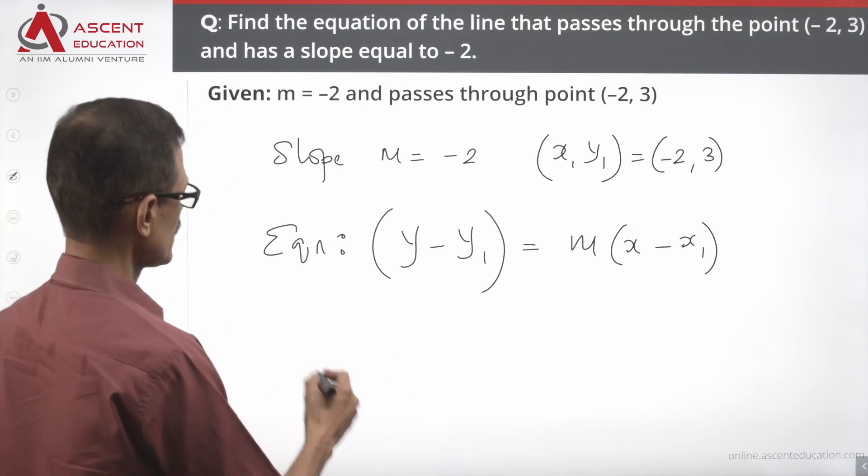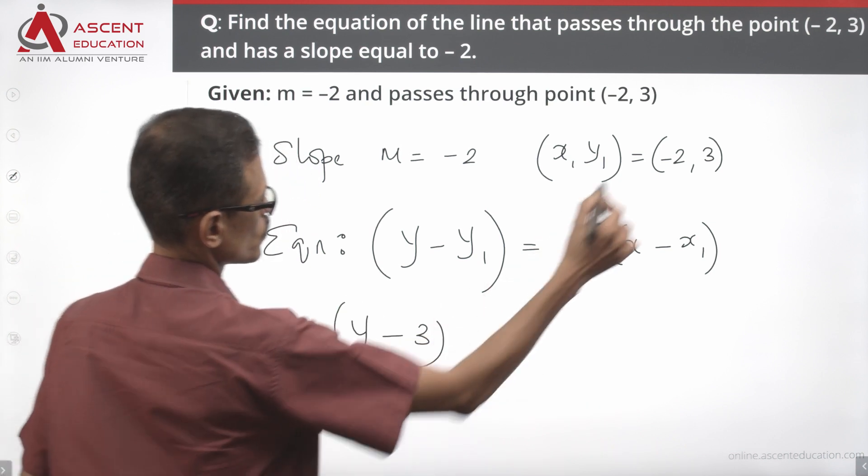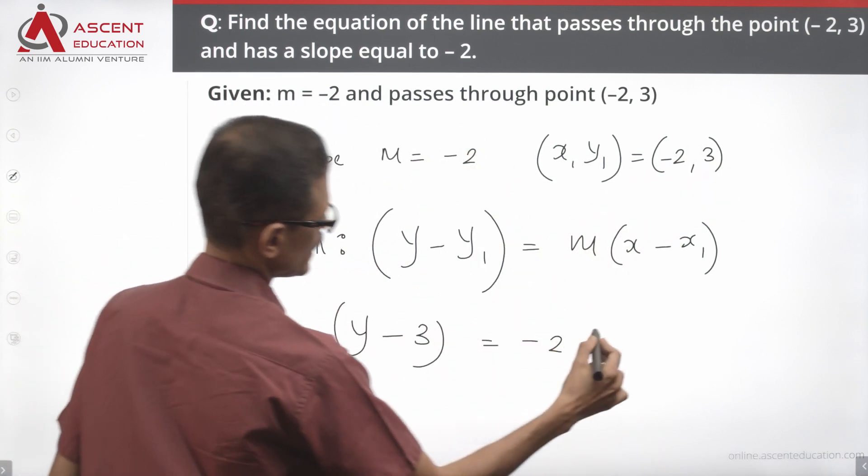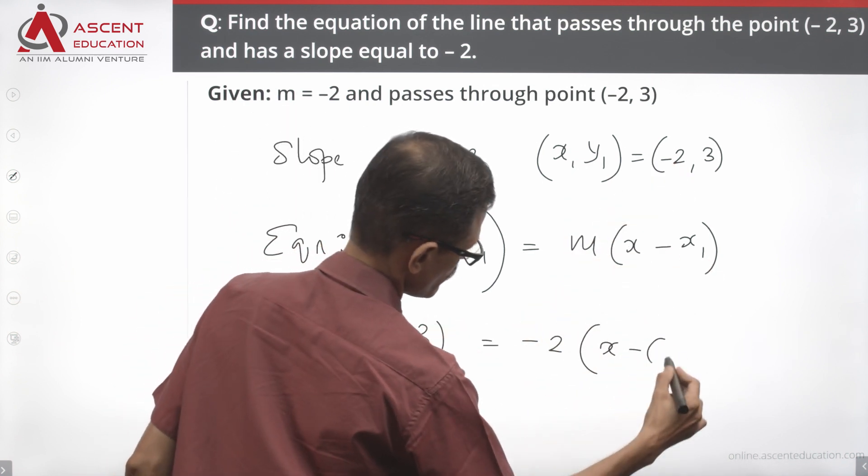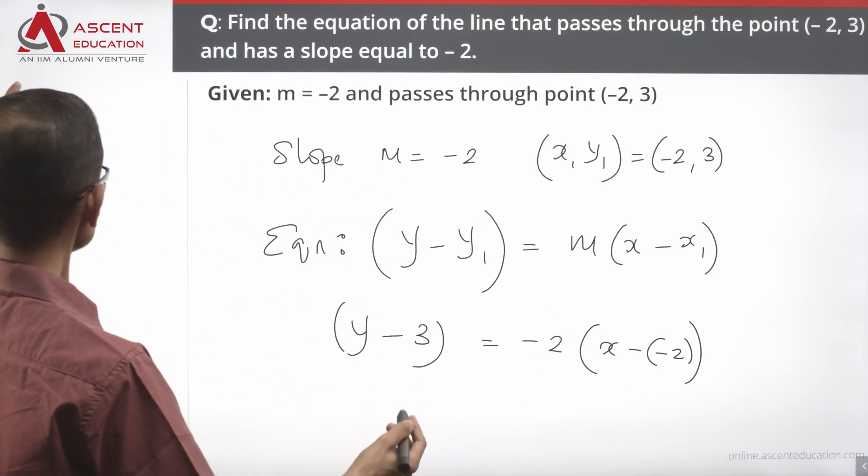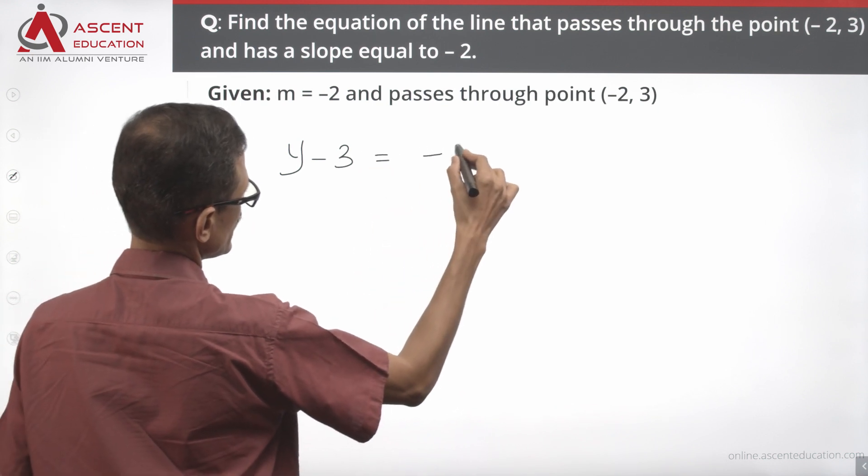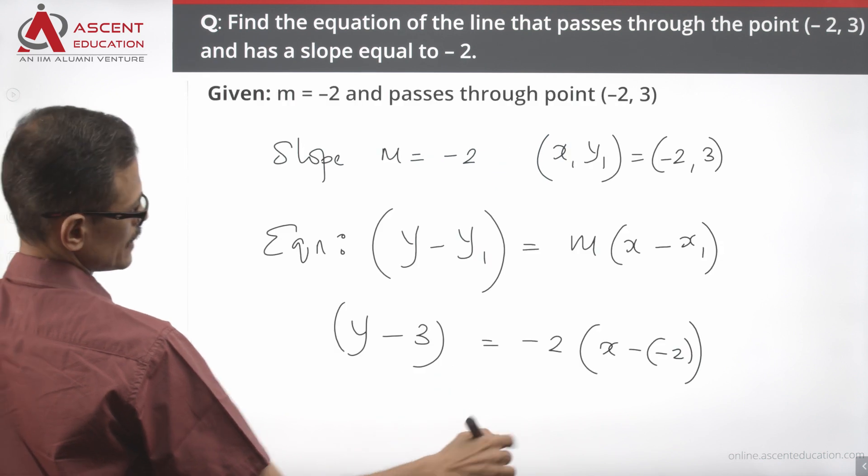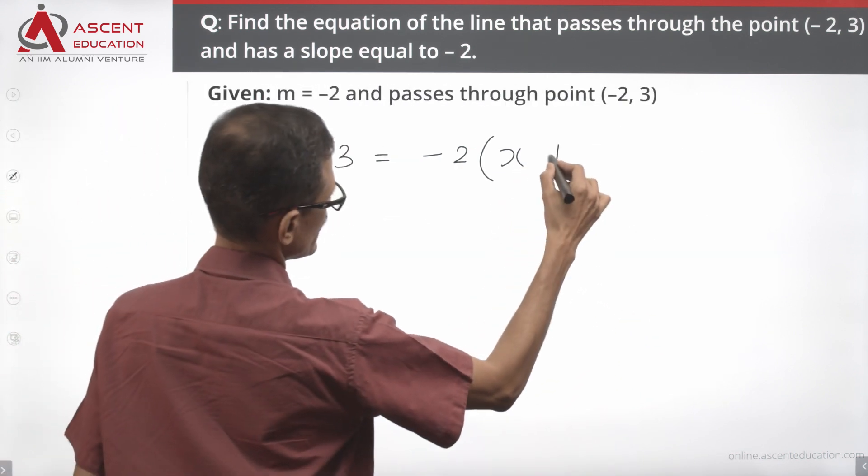Substituting these values, the equation becomes y minus y₁ equals 3. So y minus 3 equals slope minus 2 times x minus x₁, which is x minus minus 2. This becomes y minus 3 equals minus 2 times x plus 2.